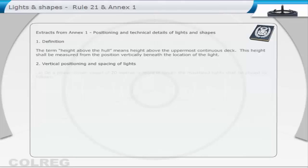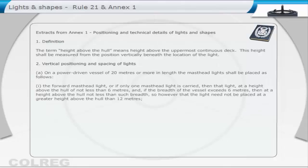Vertical positioning and spacing of lights. On a power-driven vessel of 20 metres or more in length, the masthead lights shall be placed as follows. First, the forward masthead light, or if only one masthead light is carried, then that light, at a height above the hull of not less than 6 metres.